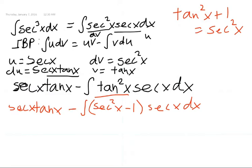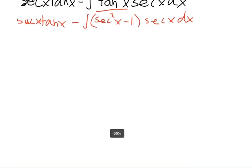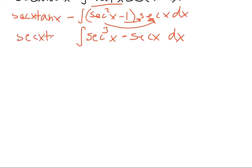And we're going to have this still subtracted by secant of x tangent of x. Let's distribute secant of x to both of these terms, and we're going to have the integral of secant cubed back, we have secant cubed back, minus secant of x dx.